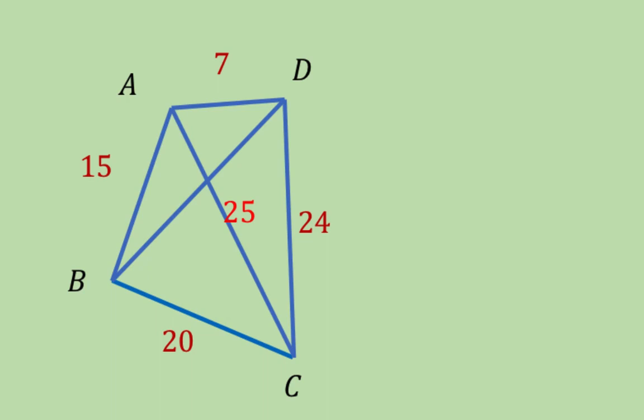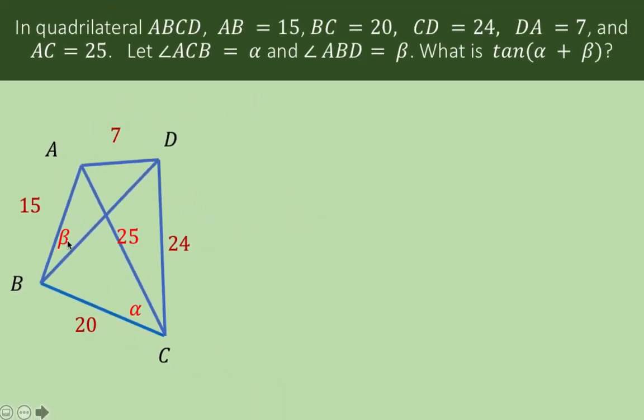Now let's locate angle ACB. Consider this triangle, and angle alpha is this angle. So this is angle alpha, that is angle ACB. Then angle ABD, so angle ABD is this angle, and let's denote that to be equal to beta. We have this angle alpha here and this angle beta here. We want to find the value of tangent of alpha plus beta.